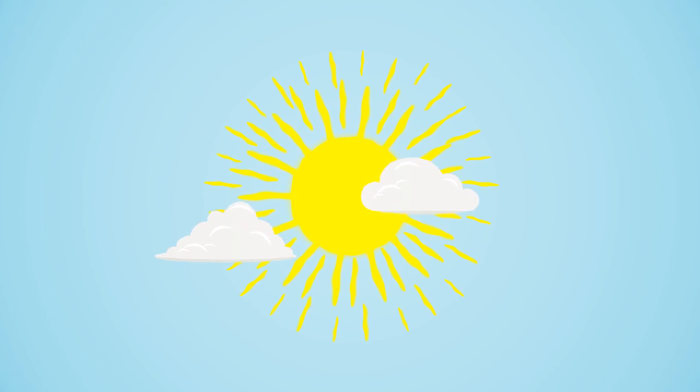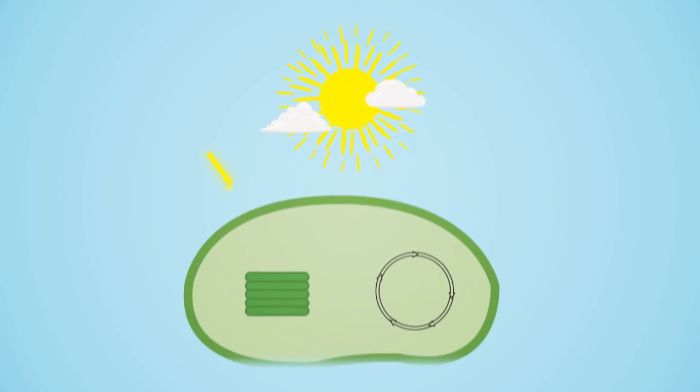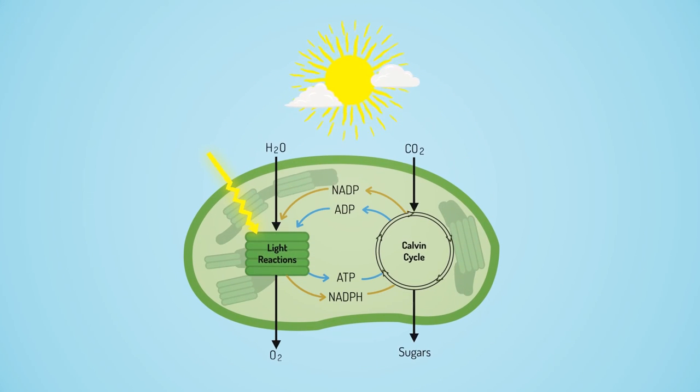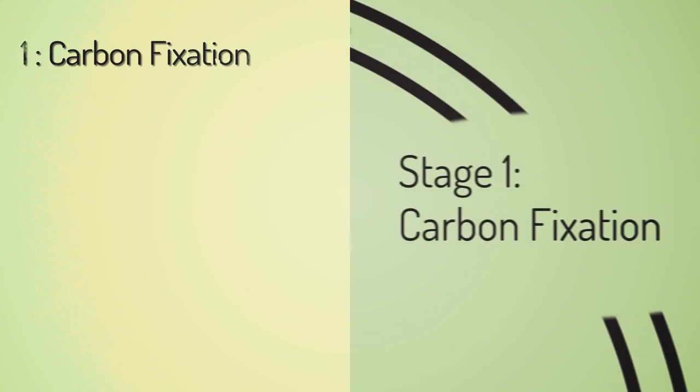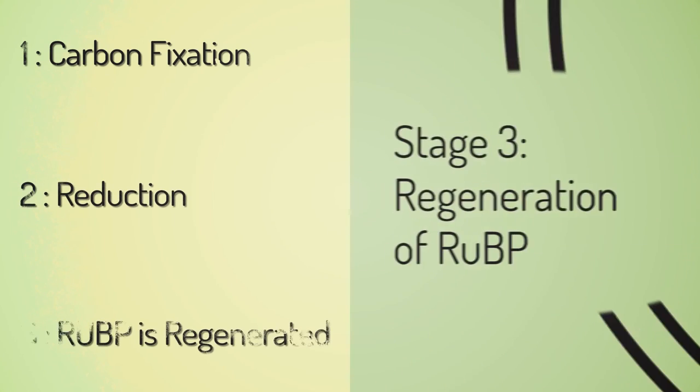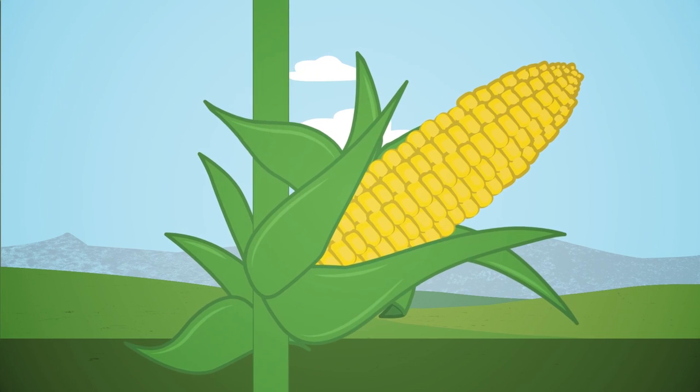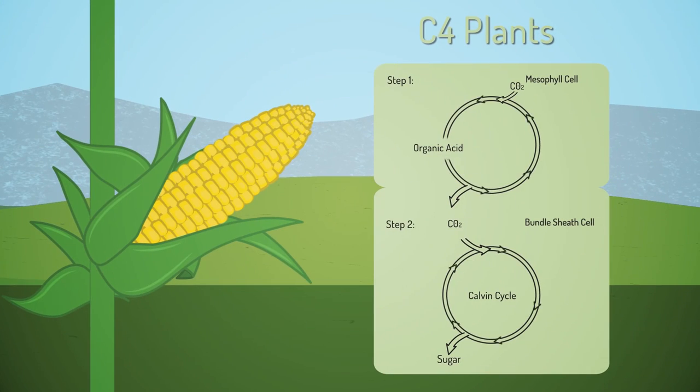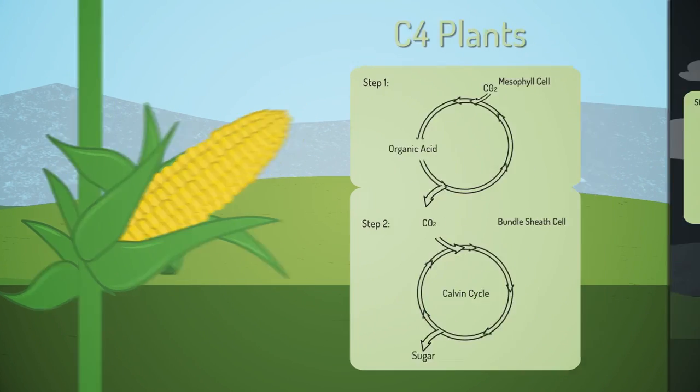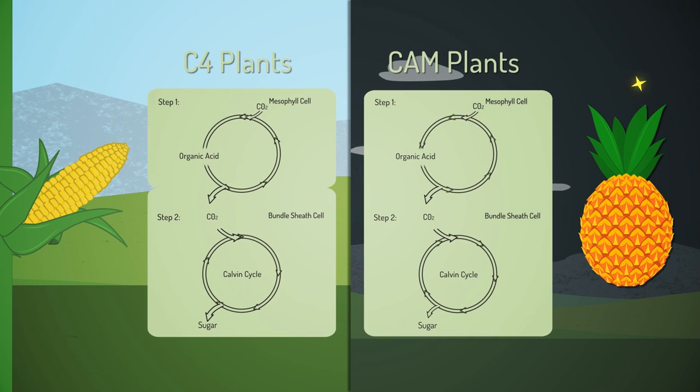We have learned that the light-dependent reactions for photosynthesis provide the energy necessary for the Calvin cycle. The steps of the Calvin cycle include carbon fixation, reduction, and the regeneration of RUBP. C4 plants fix CO2 by making four-carbon molecules, while CAM plants store the CO2 as organic acids during the night.